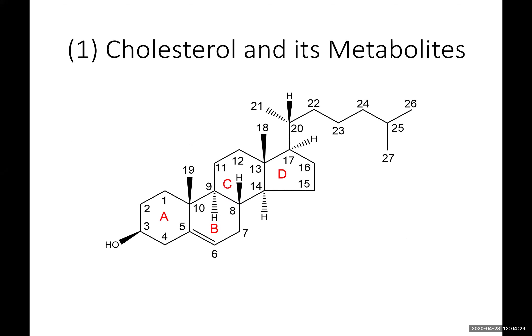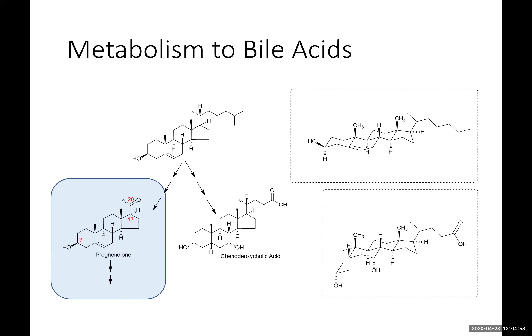Let's start with cholesterol and its metabolites. Cholesterol has a four-ring structure and a side chain with eight carbons, giving 27 carbons in total, which provides the template on which all other mammalian sterols are built. Cholesterol is metabolized to hormonal steroids — which we won't discuss today — and to bile acids, which is what we're going to explore.